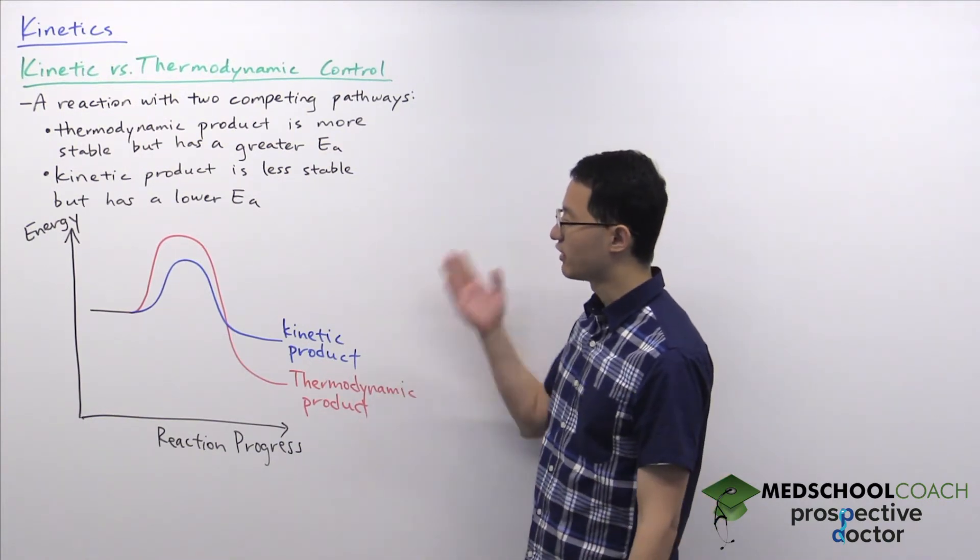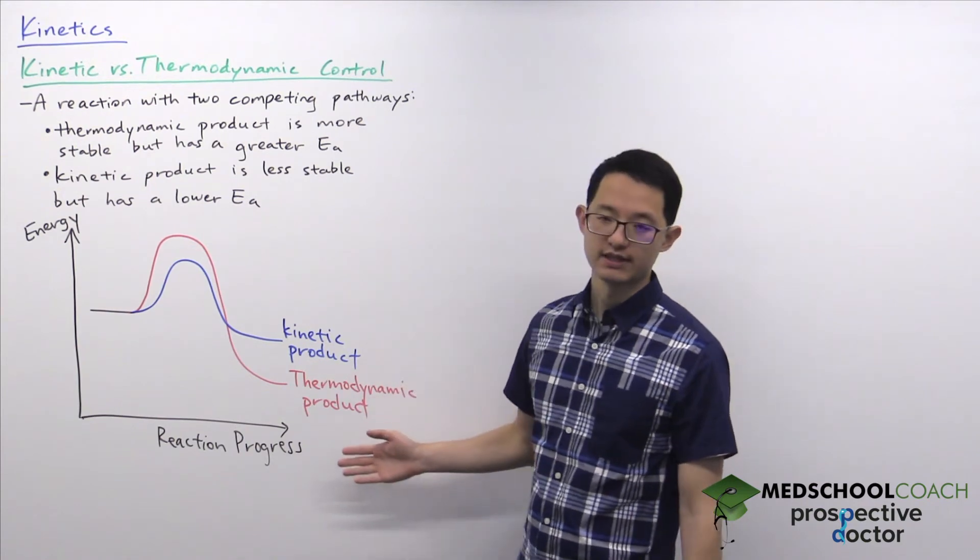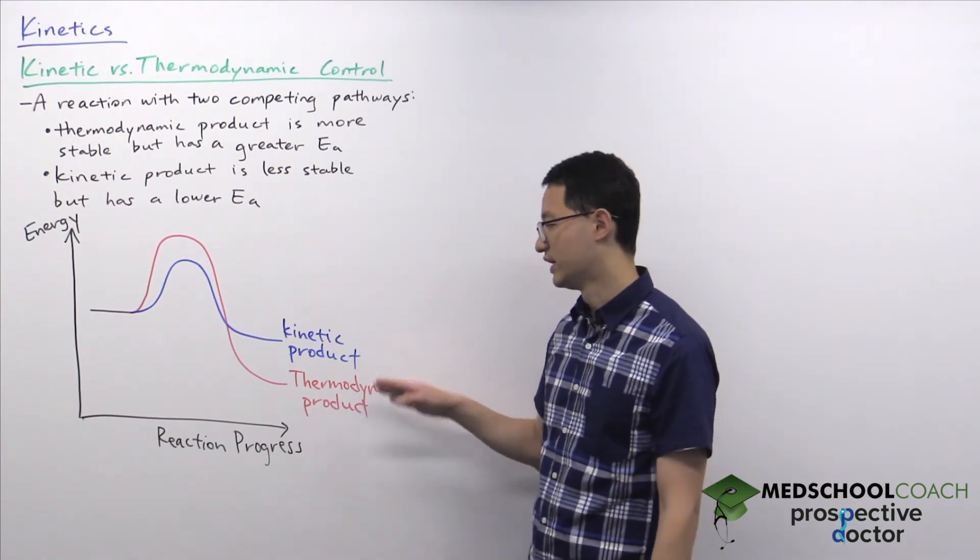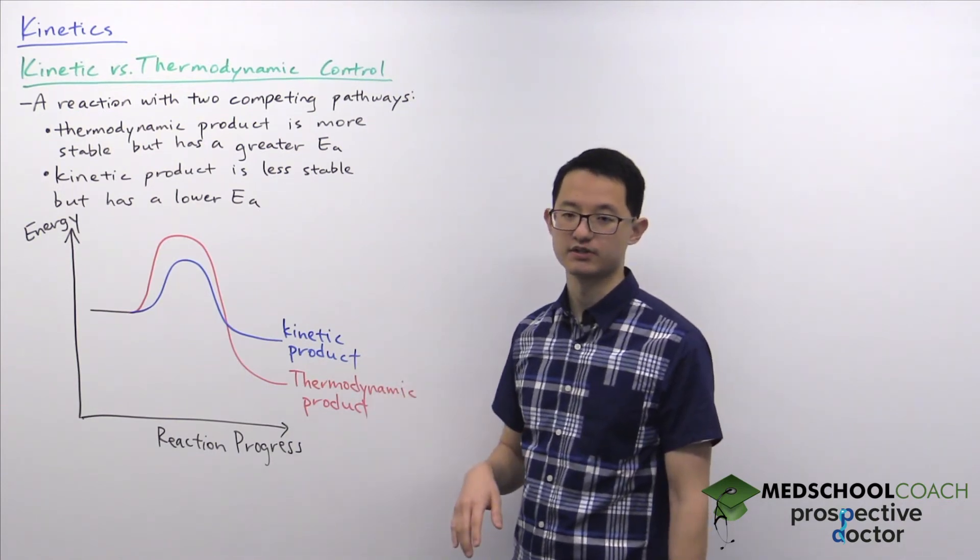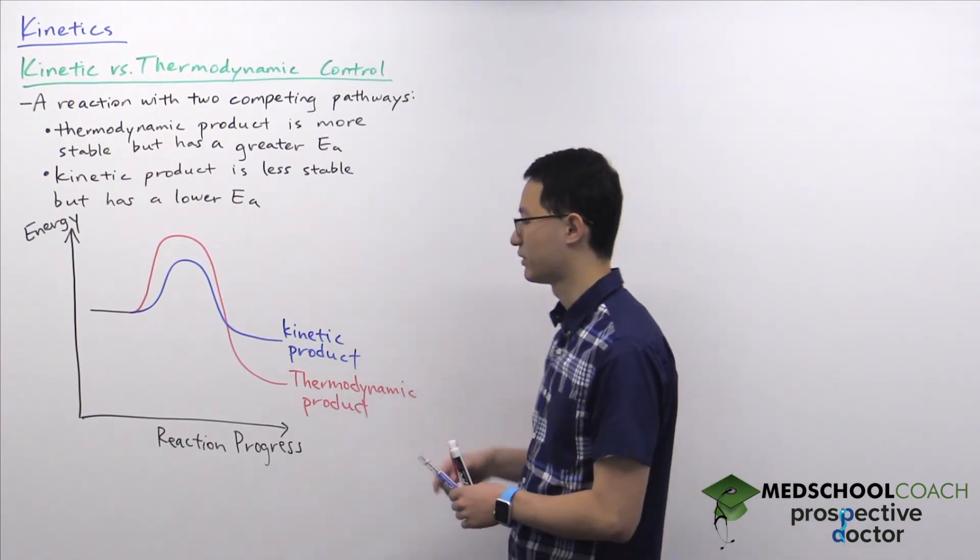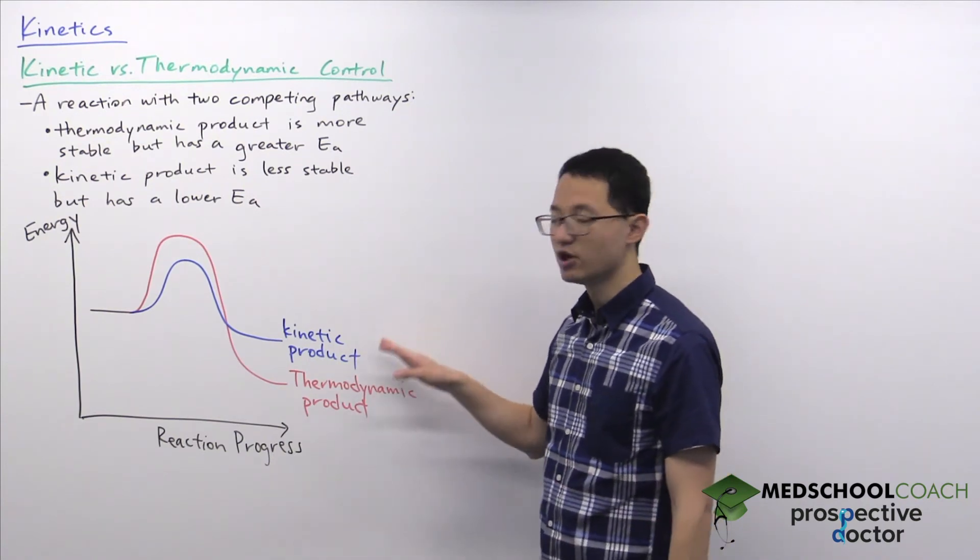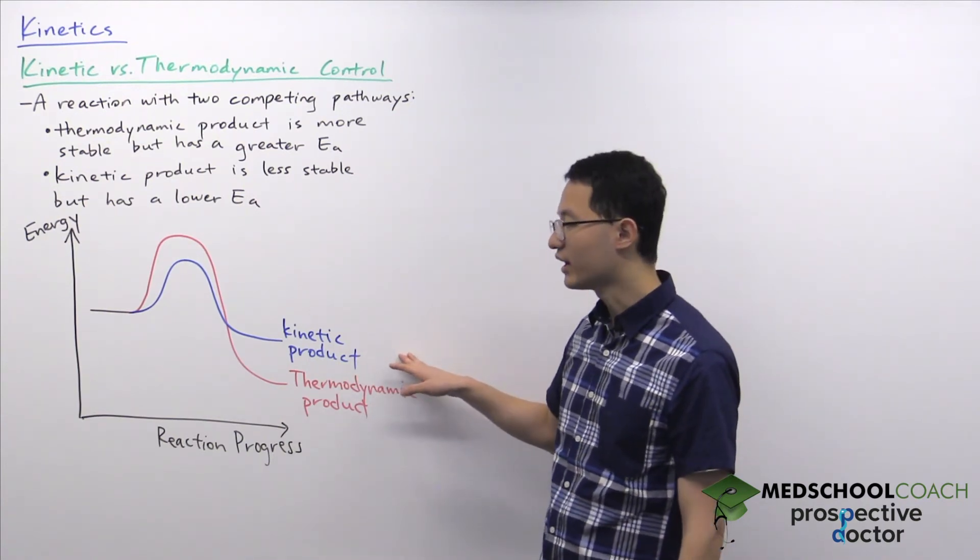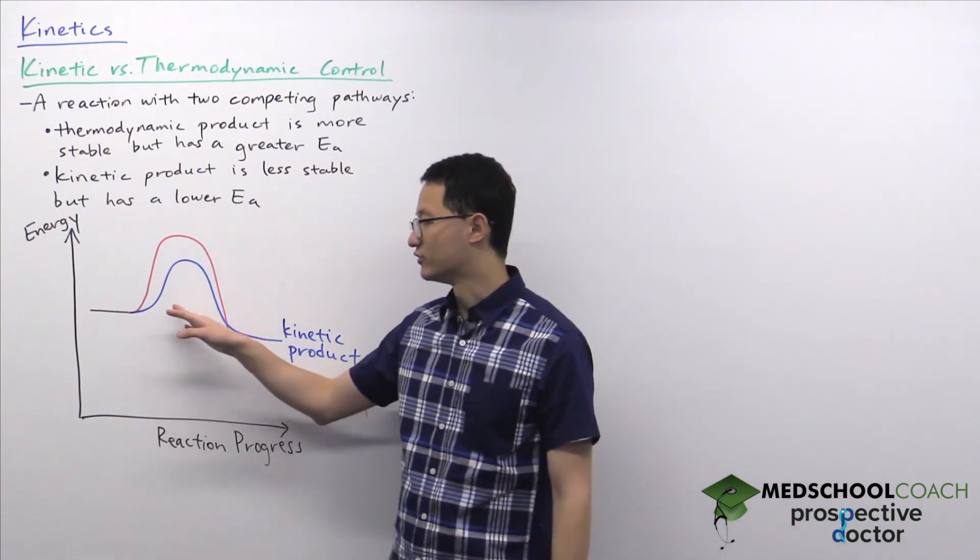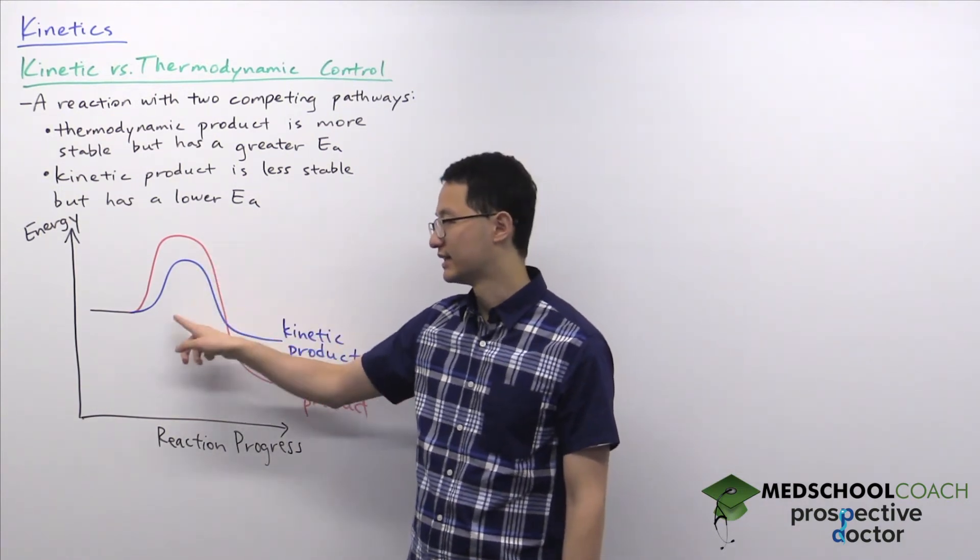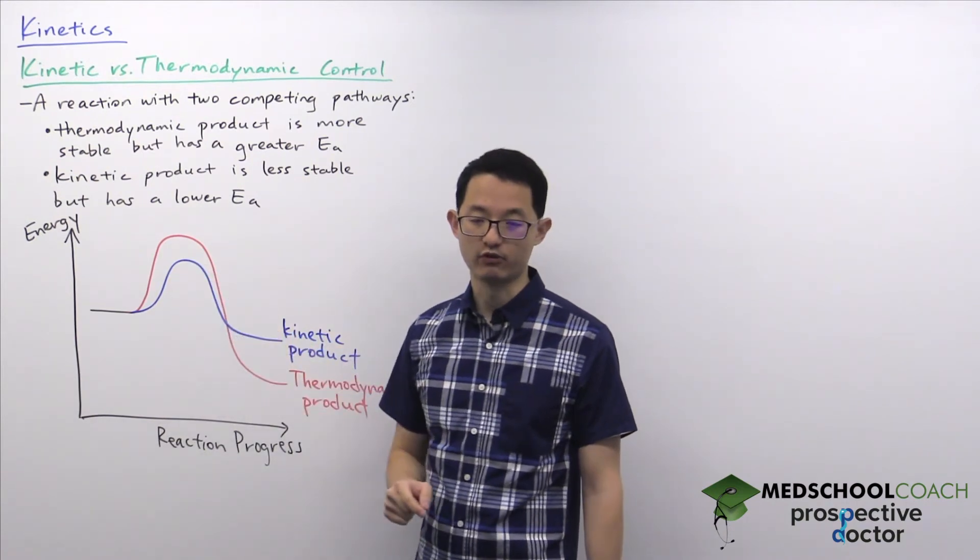And as it turns out, there are reaction conditions that can be altered to preferentially favor the formation of one of these two products. So for the kinetic product, you can favor the formation of this product if there is low energy, so there is not enough energy to exceed the activation energy barrier for the thermodynamic product, then only the kinetic product can be formed.